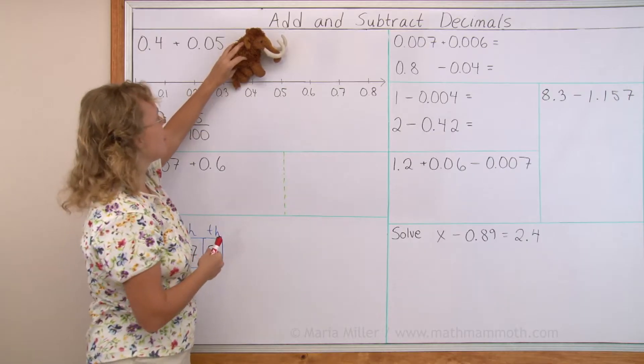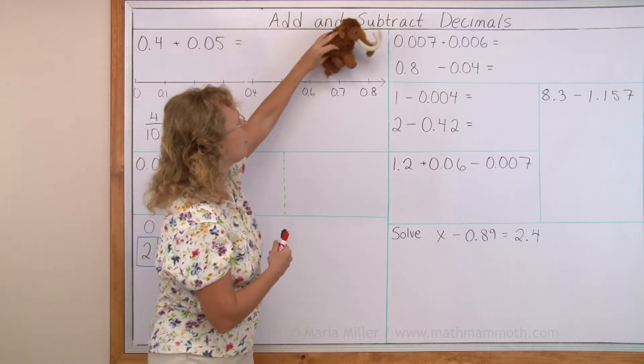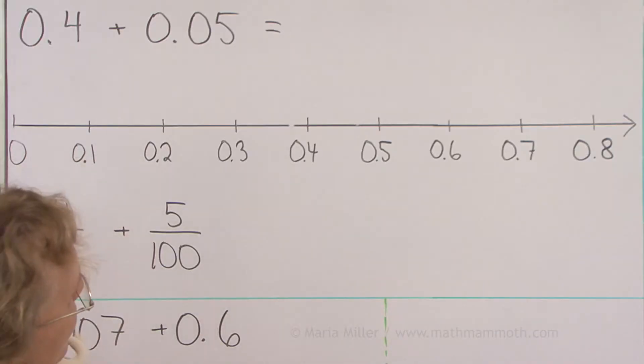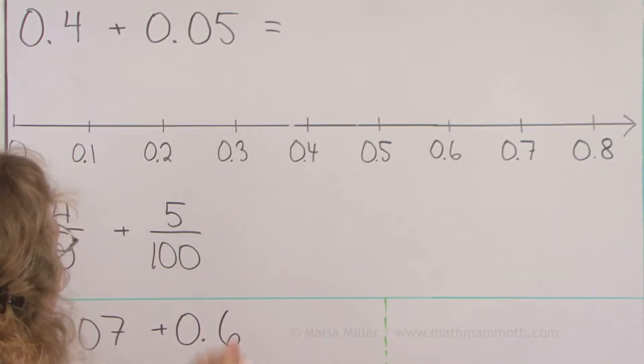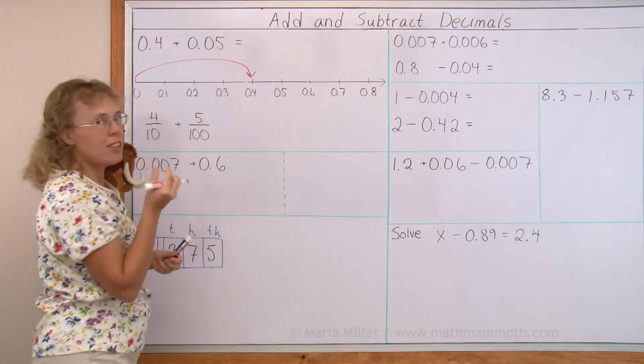He cannot jump 5 tenths more. If he jumped 5 tenths, he would jump 1, 2, 3, 4, 5 tenths more to 0.9. So where is he going to jump from here? My first jump here, and then from here, 5 hundredths.